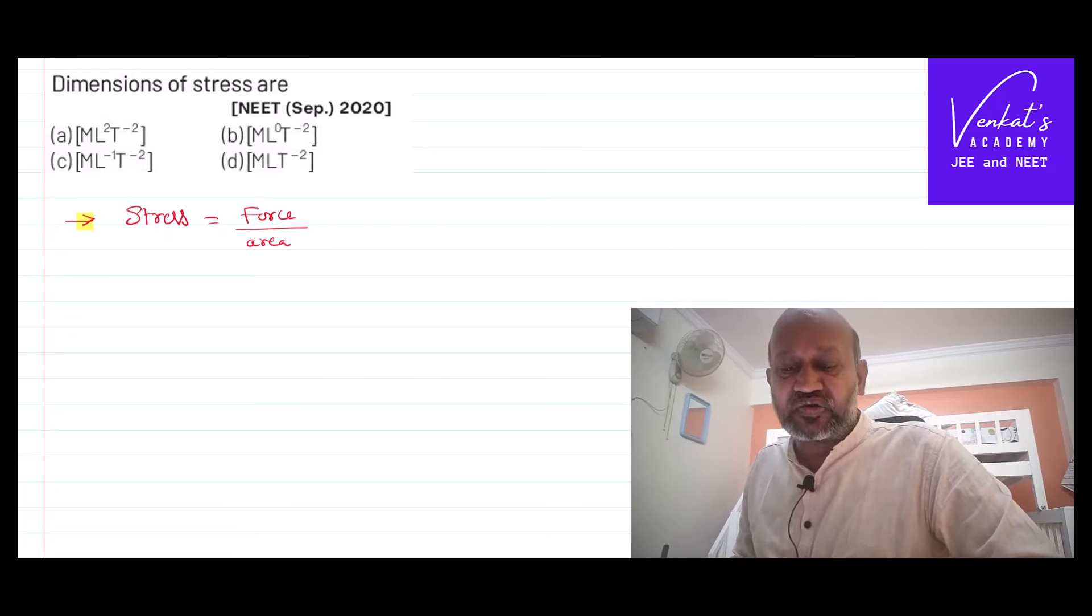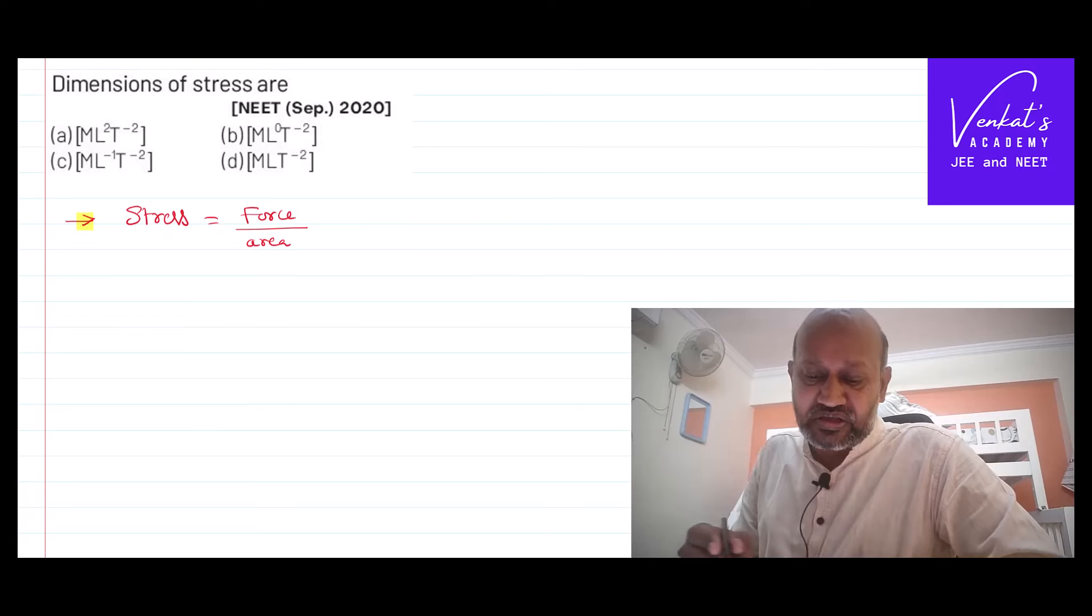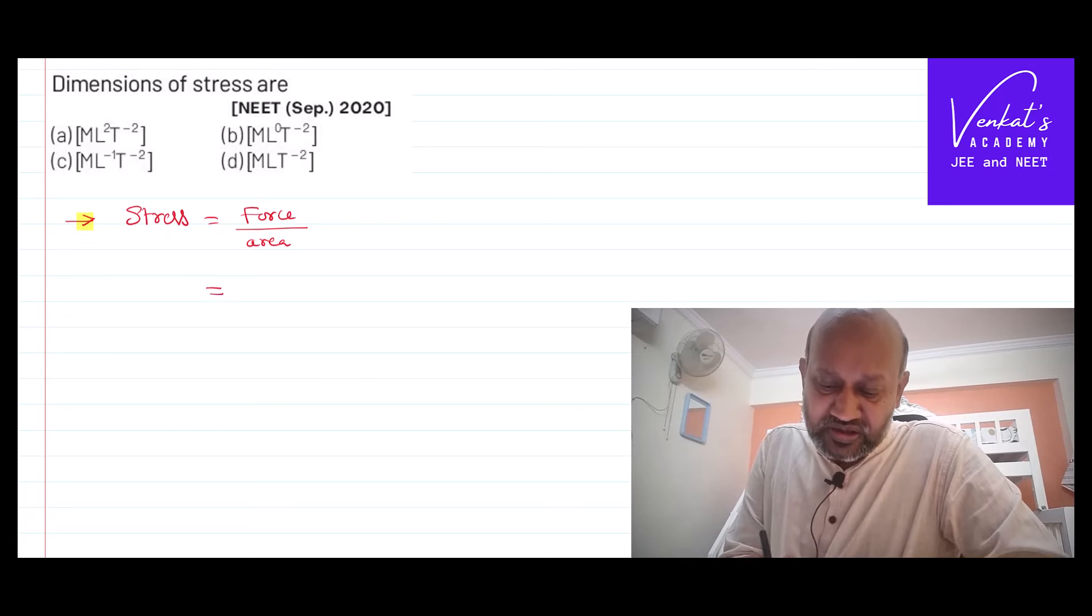So stress is force by area. Force is mass into acceleration by area of cross-section. Mass is capital M, acceleration is rate of change of velocity in terms of dimensions by area of cross-section.